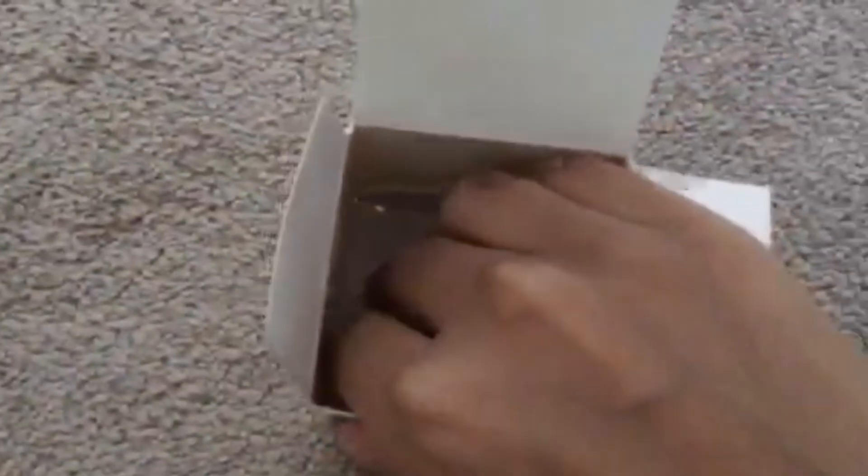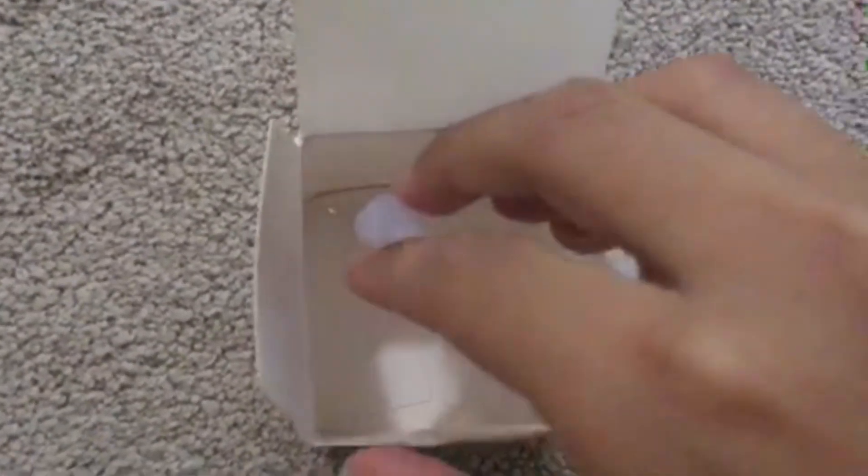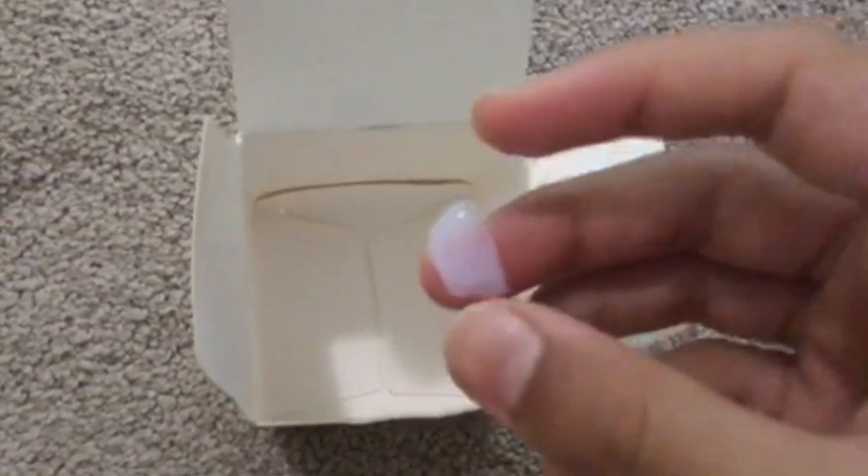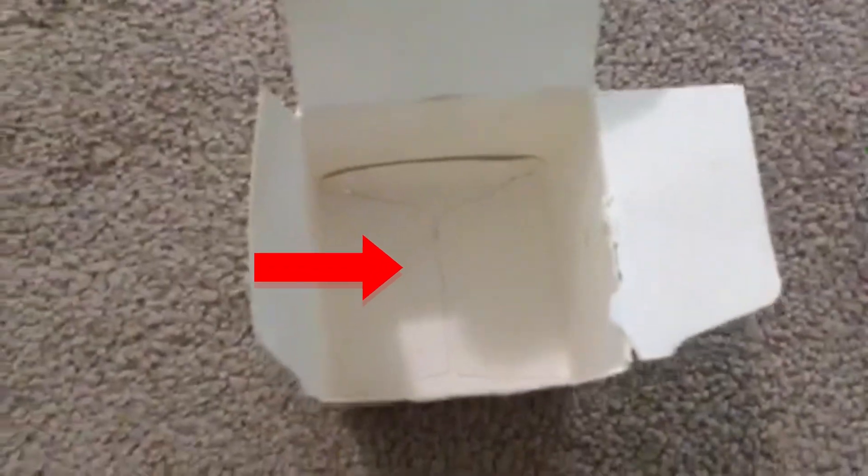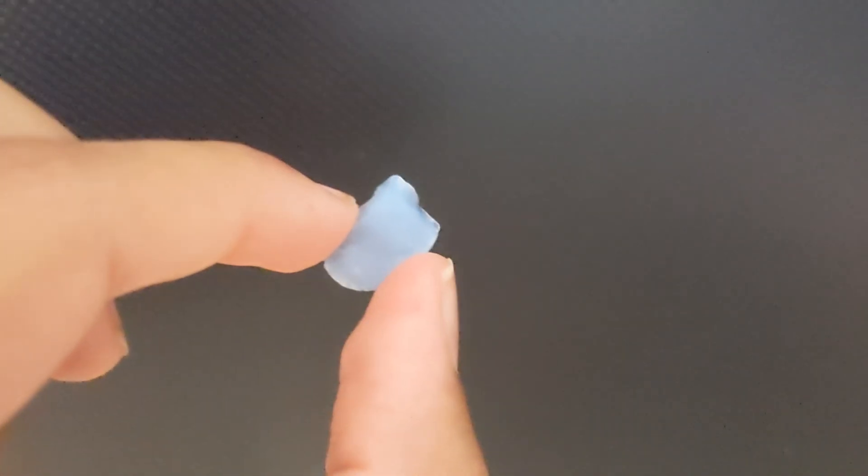Another interesting quality of aerogel is its color. On a white background like this, it's almost invisible. You can barely make it out here. But on a darker background, you can see it's actually blue.